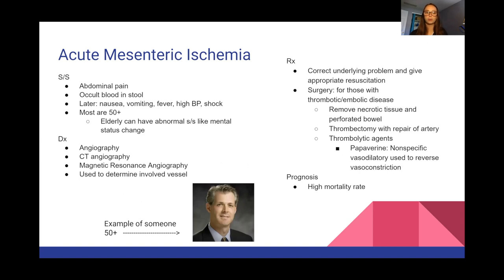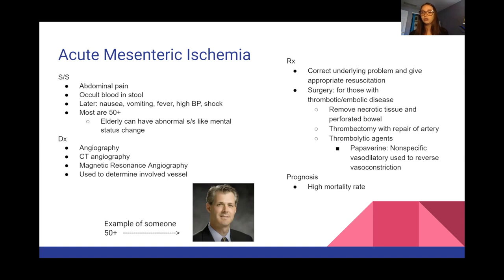Signs and symptoms include abdominal pain, blood in the stool, nausea, vomiting, fever, and high blood pressure shock. Most people who get this are 50-plus, and it can cause mental status changes in the elderly. To diagnose, they can do angiography, CT angiography, or magnetic resonance angiography to determine the involved vessel. Treatment involves correcting the underlying problem, resuscitating blood flow, and for thrombotic or embolic disease, surgery to remove necrotic tissue and perforated bowel. They can also do a thrombectomy to repair the artery or give thrombolytic agents. This has a pretty high mortality rate, so early treatment is critical.